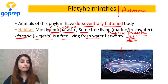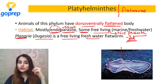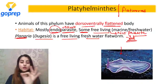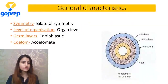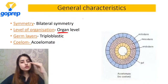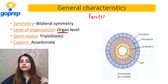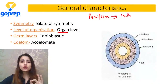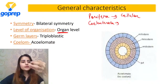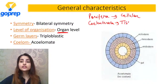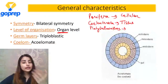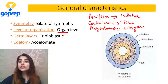They show a high property of regeneration. Agar kisi wajah se Planaria ki body parts mein break ho jaati hai, then each part can regenerate into a whole new Planaria. We will talk about that in their reproduction. Abhi we are discussing general features. Their level of organization - organ level. Kyunki hum hierarchy mein chal rahe hain. Porifera ke paas cellular level tha. Coelenterata aur Ctenophora ke paas tissue level tha. Ab Platyhelminthes mein - organ level of organization.